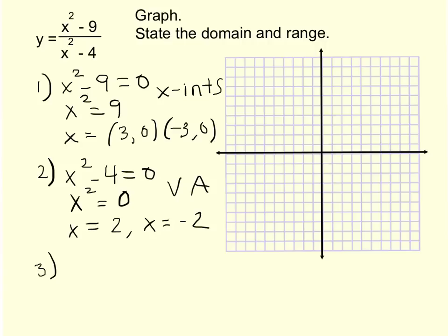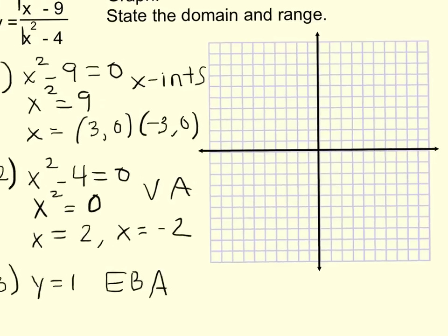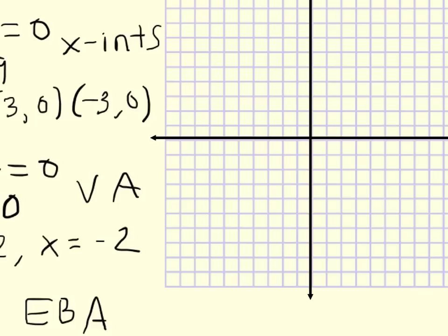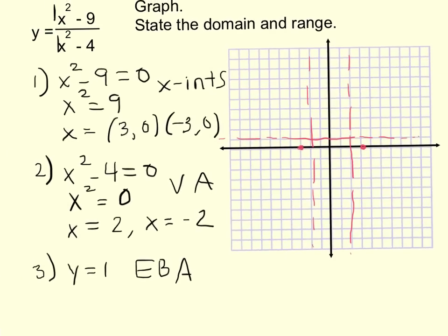Step 3 — looking at the degrees: both the numerator and denominator are degree 2, so the degrees are the same. That means I divide the leading coefficients, which are both 1, giving y = 1 as the end behavior asymptote. With 2 vertical asymptotes, I'll have 3 pieces of graph — one on the left, one on the right, and one in the middle.